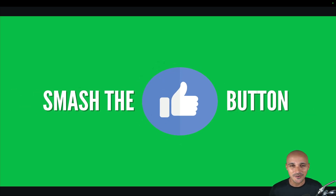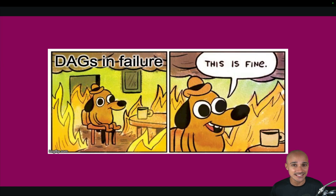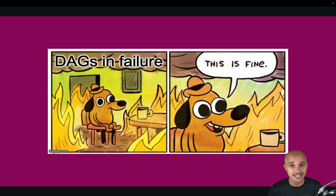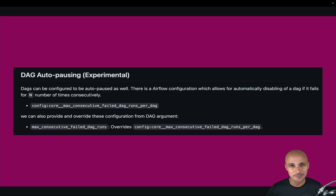Without further ado, let's discover what Airflow 2.9 has for us. It is common to have DAGs that keep failing over and over, especially on weekends, or DAGs that keep failing because they were experiments or just tests. As those DAGs keep running and failing, you are wasting a lot of resources, and at some point it might be useful to stop them automatically. This is possible with the new max_consecutive_failed_dag_runs parameter.